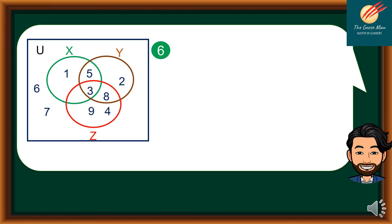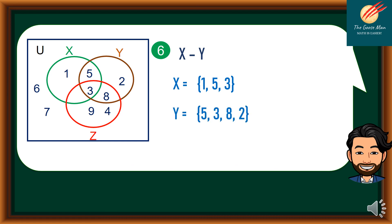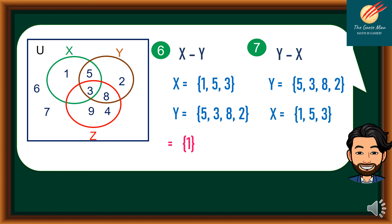Problem number 6: elements in X but not in Y. X has {1, 5, 3} and Y has {5, 3, 8, 2}. X minus Y — elements in X but not in Y — we have only 1. On the other hand, Y minus X — elements in Y but not in X — we have 8 and 2. That ends our discussion on operations on sets. This is Teacher Ony Di Guzman — don't forget to subscribe to my channel. Thank you.